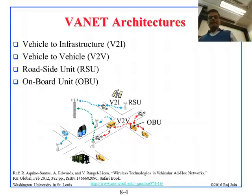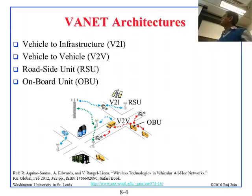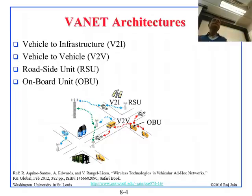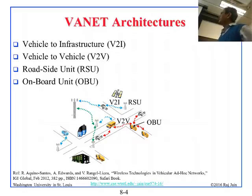The key terms used in VANETs are vehicle-to-infrastructure (V2I) and vehicle-to-vehicle (V2V). On the roadside there could be hidden antennas, which we call infrastructure. These are called RSUs — roadside units — while onboard units (OBUs) are in the car. So communication is either V2I or V2V.